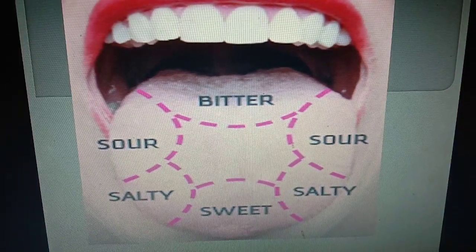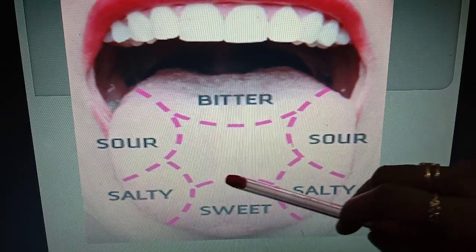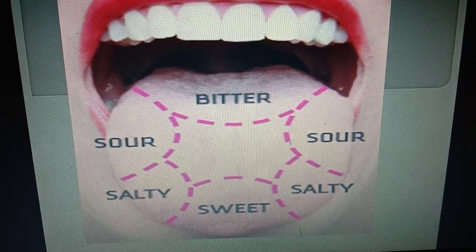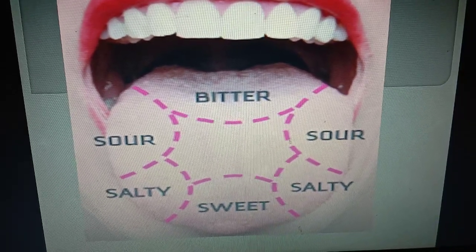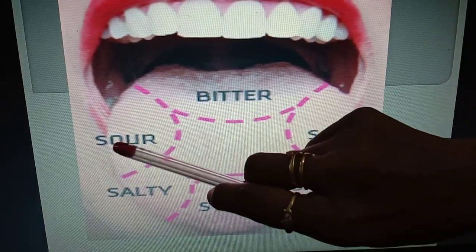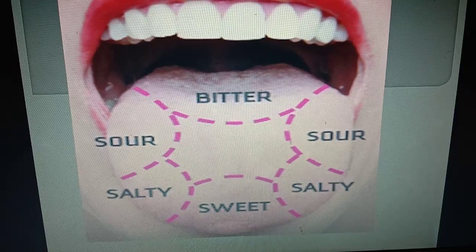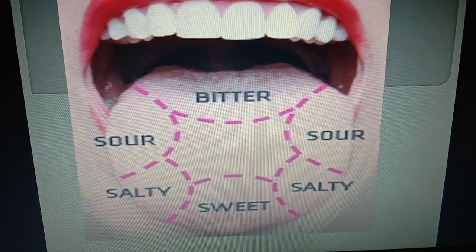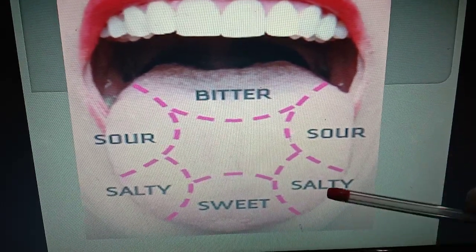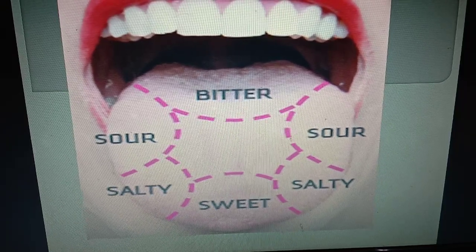Sweet receptors are present at the tip of the tongue. Sour receptors are present along the sides of the tongue. Salty receptors are present in the upper front portion, just behind the sweet receptors.